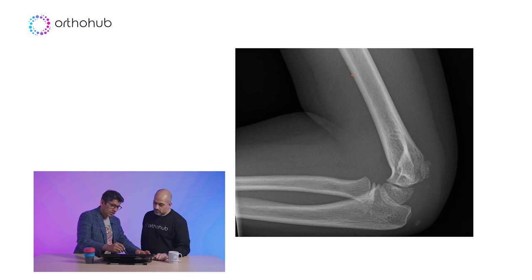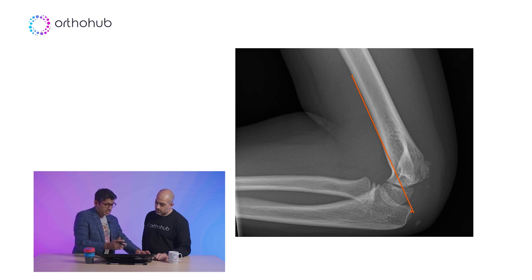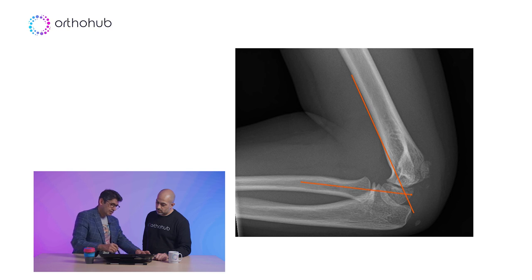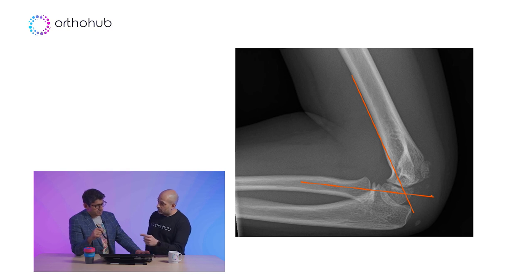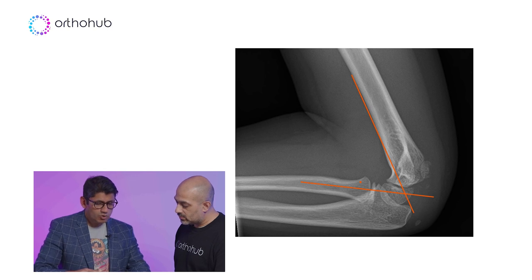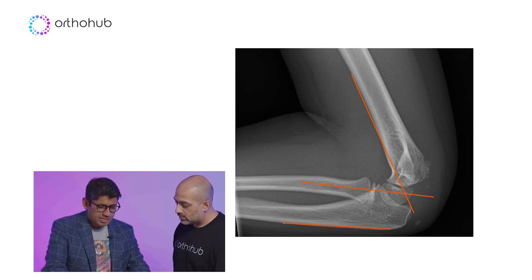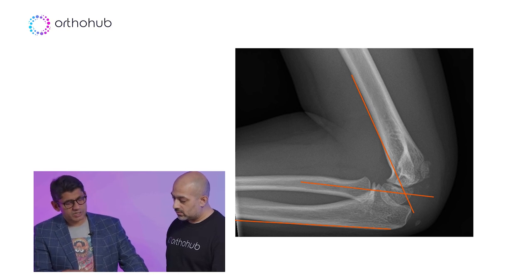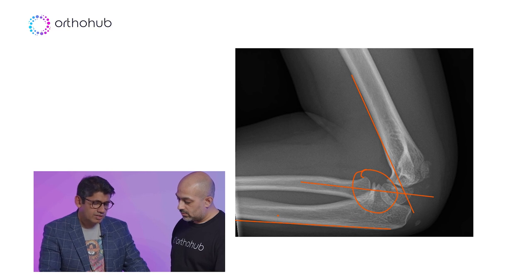The other things you're going to look for are your anterior humeral line - does it cross the capitellum? So if you've got a supracondylar fracture, if it's an extension type, the capitellum will be behind that line. The other important line is through your radial neck and into your capitellum - they should intersect, whatever position, whether there's some flexion or extension. If it doesn't intersect, you're really looking for a Monteggia variant. Obviously you need an X-ray of the whole forearm, and one of the things you want to check is: is there any ulnar bowing? Because you can get plastic deformation, so you've got to check the whole length of the ulnar.